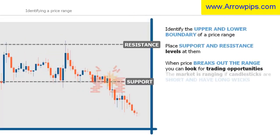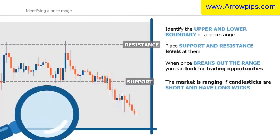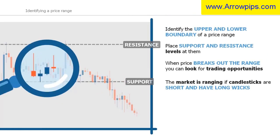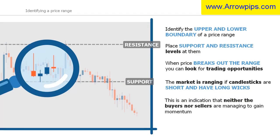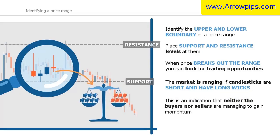A hint to see if the market is ranging is to look at the candlestick formations. If the candlesticks are unusually short and have long wicks, then this is a further indication that neither the buyers nor the sellers are managing to gain momentum.